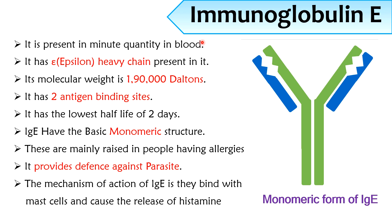Immunoglobulin E: IgE is present in minute quantities in blood. It has epsilon type heavy chains. The molecular weight of IgE is 190 kilodaltons, and there are two antigen binding sites present in IgE. IgE has the lowest half-life of two days, and its structure is monomeric. IgEs are mainly raised in people with allergies. IgE provides defense against parasites, and its mechanism of action involves binding with mast cells and causing the release of histamine.